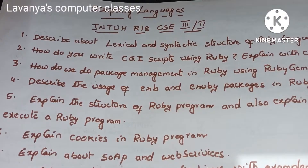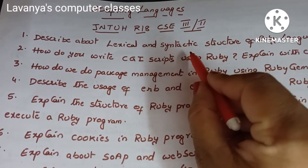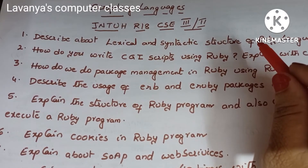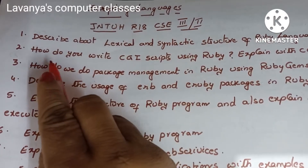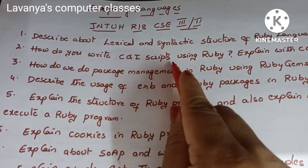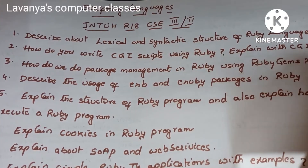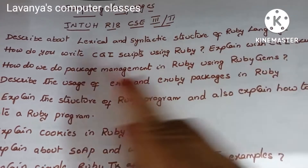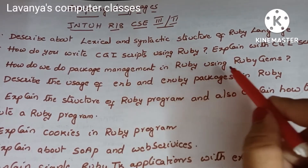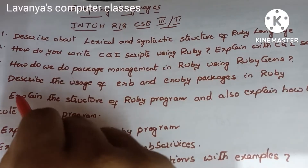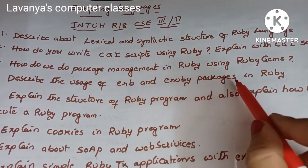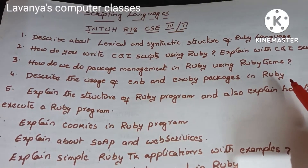The first question is: describe the lexical and syntactic structure of Ruby language. These questions are already from previous JNTUH question papers, so carefully read all of them. How do you write CGI scripts using Ruby? Explain with a CGI script program. Next: how do we do package management in Ruby using Ruby gems? And describe the usage of ERB and ERuby packages in Ruby. These are all unit 1 questions.